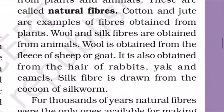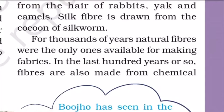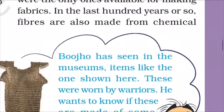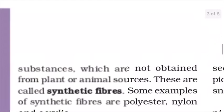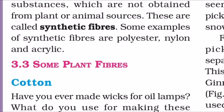Wool is also obtained from the hair of rabbit, yak, and camel. Silk fiber is drawn from the cocoon of the silkworm, which builds the cocoon around itself. For thousands of years, natural fibers were the only ones available for making fabrics. In the last hundred years or so, fibers are also made from chemical substances — these are not from plant or animal sources. These are called synthetic fibers. Some examples of synthetic fibers are polyester, nylon, and acrylic.